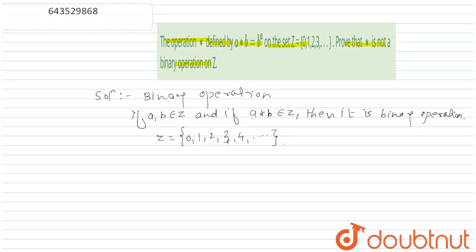So here, a star b is equal to b raised to a. Suppose a is equal to 0 and b is equal to 0. That means a comma b belongs to Z, 0 belongs to Z.